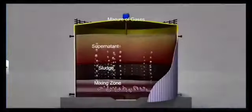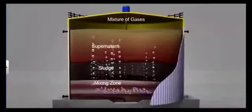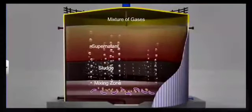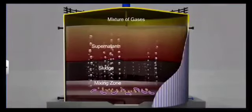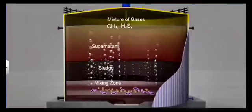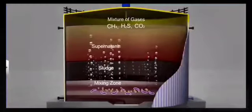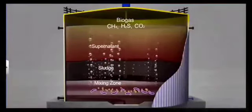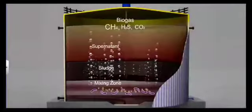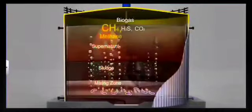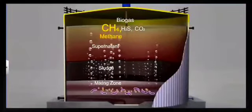This activated sludge is a great source of biogas production. It is sent to an anaerobic chamber or anaerobic digester where the microbes start degrading it and produce a mixture of gases which are methane, hydrogen sulfide, and carbon dioxide. This combination of these three gases is called biogas, where 75% is methane.